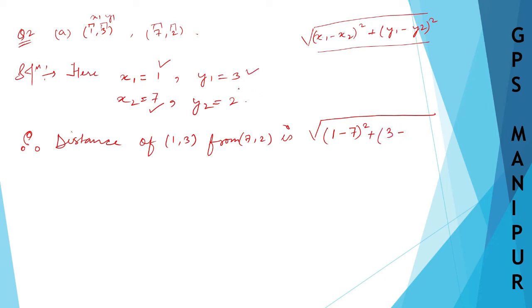Minus y2 is 2 and square. I hope you understand: instead of x1 we are putting 1, instead of x2 we are putting 7, y1 is 3, and y2 is 2.